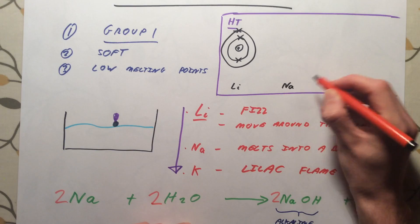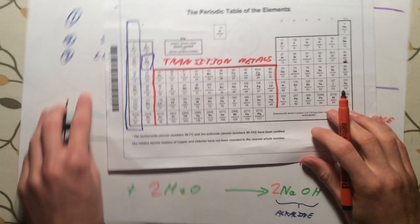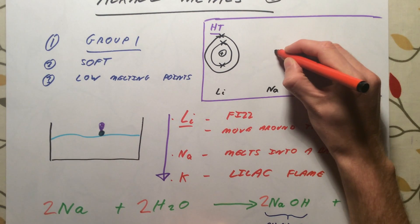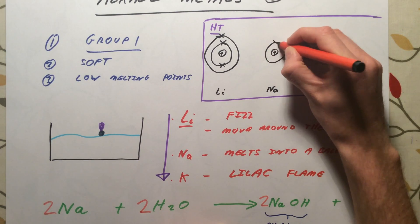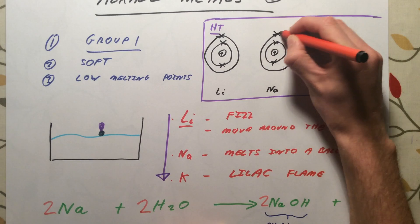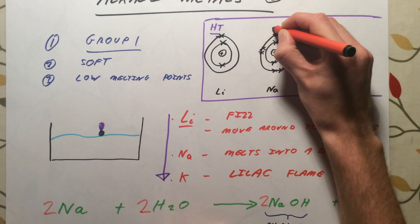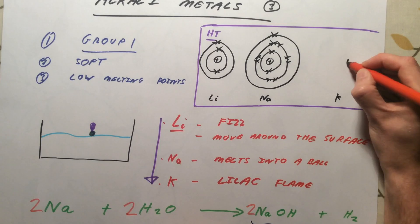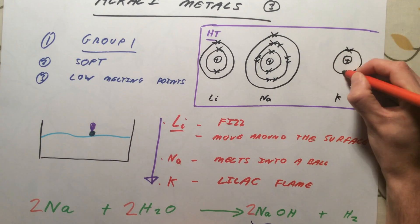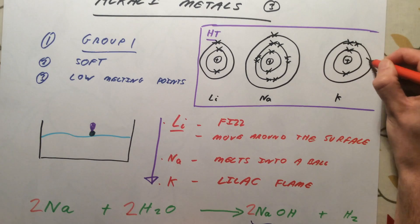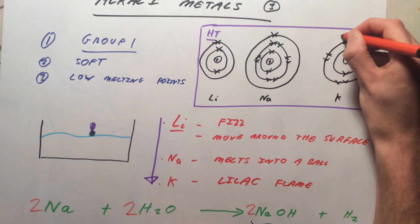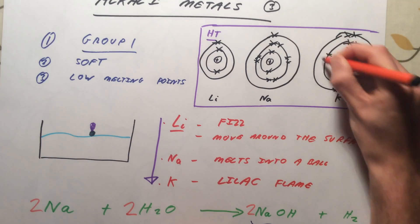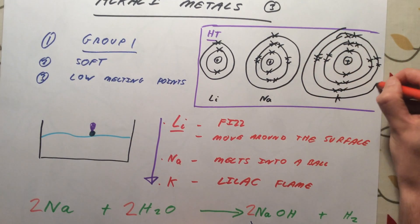Sodium, the next element down, because it is a period below lithium, it has got an extra electron shell. So it's got 11 electrons in total. The first two in the first shell, it's got eight in the second shell, and it's got a single electron in that third and outer shell. You've seen the pattern here, potassium has got yet another electron shell. So it's going to go two, eight, eight, and finally one. I've got a really big atom this time.